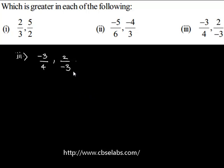Here, negative 3 upon 4 already has a positive denominator. But, 2 upon negative 3 has a negative denominator.